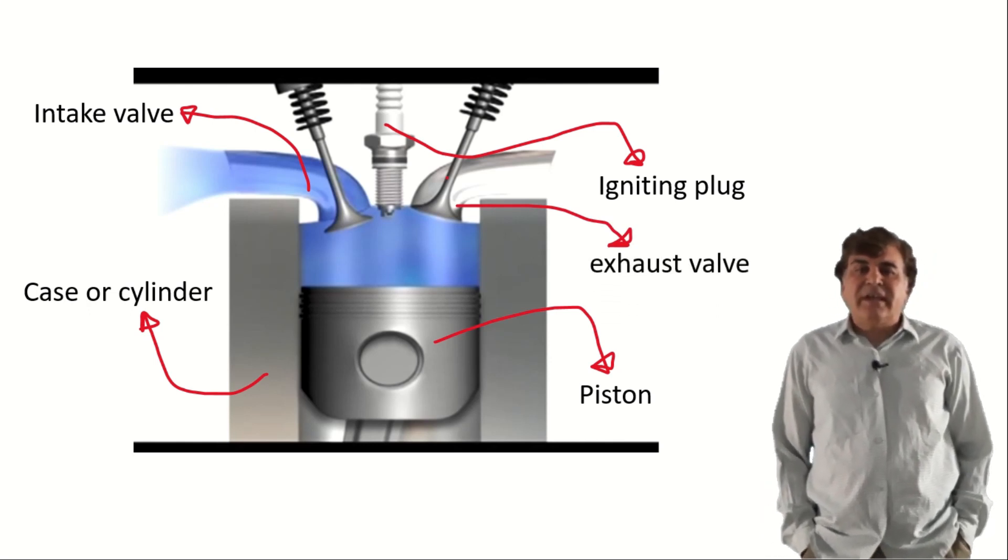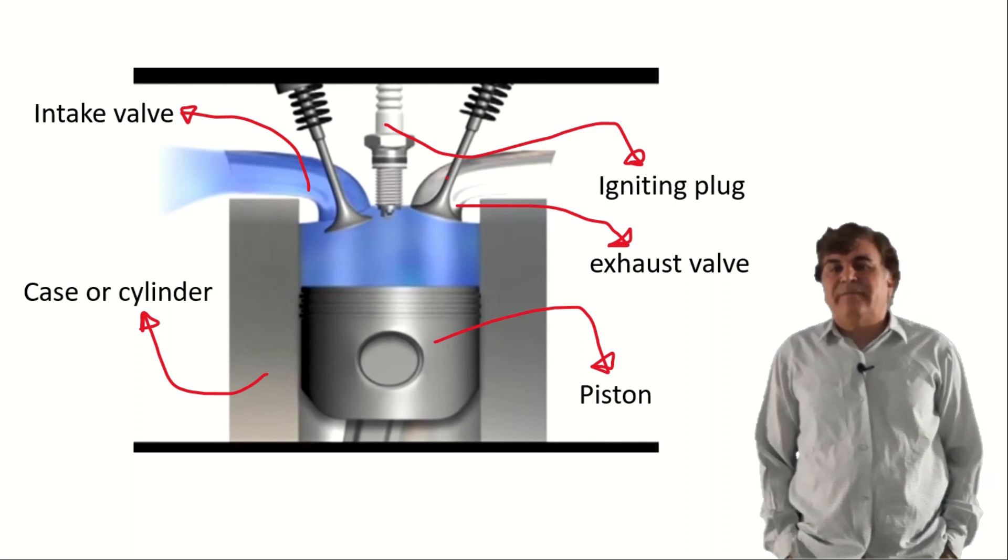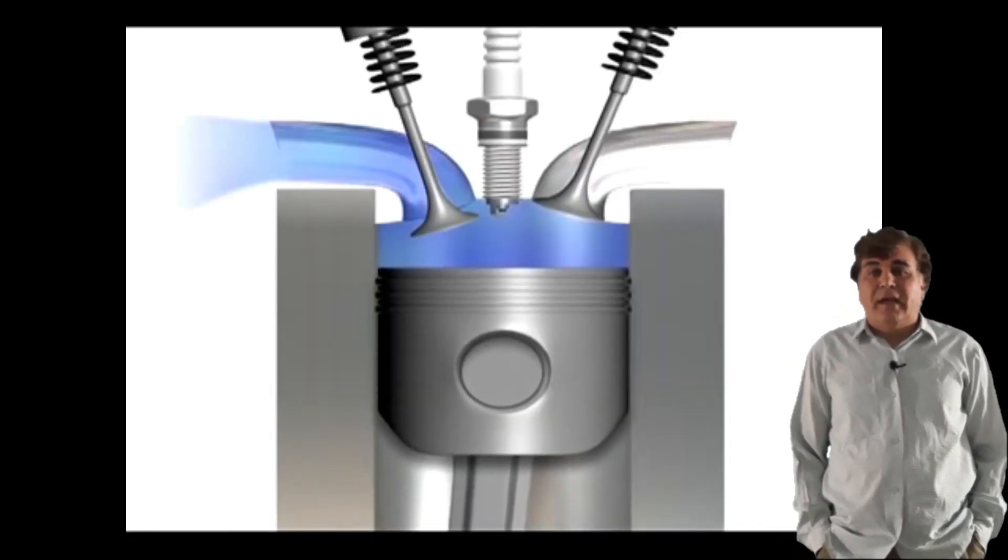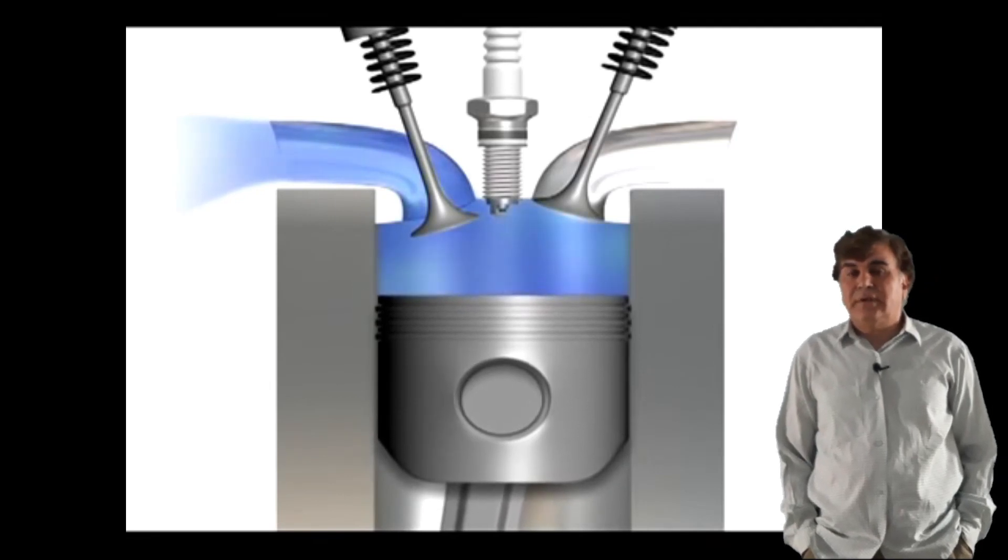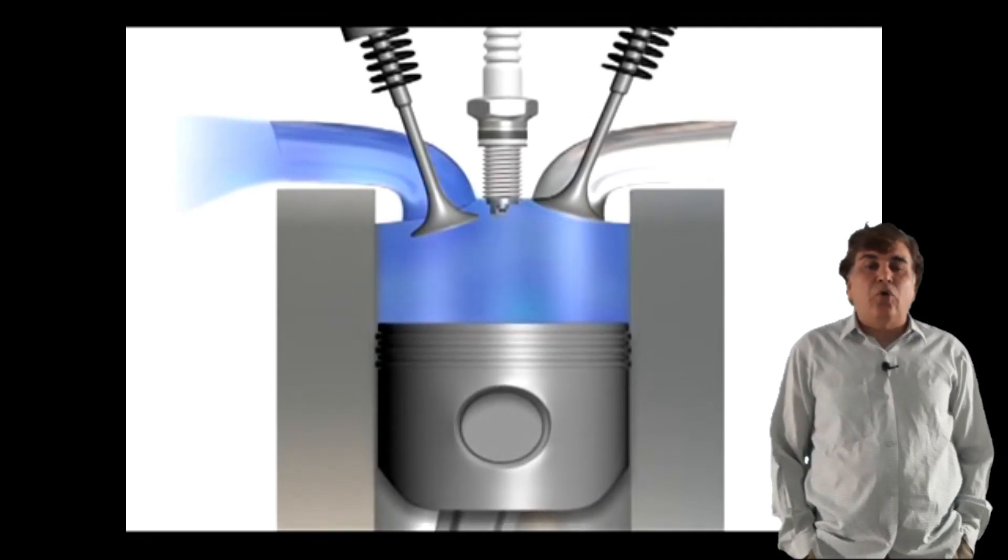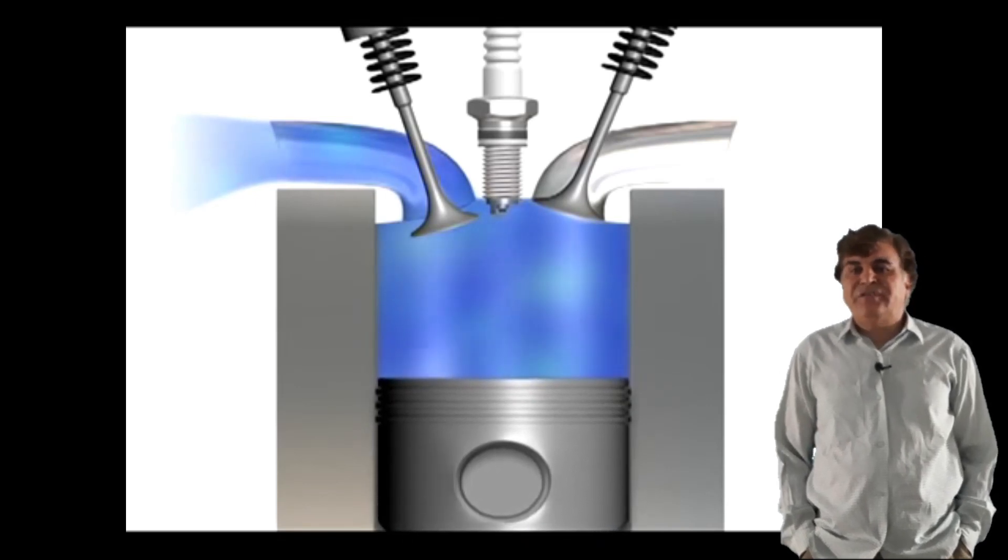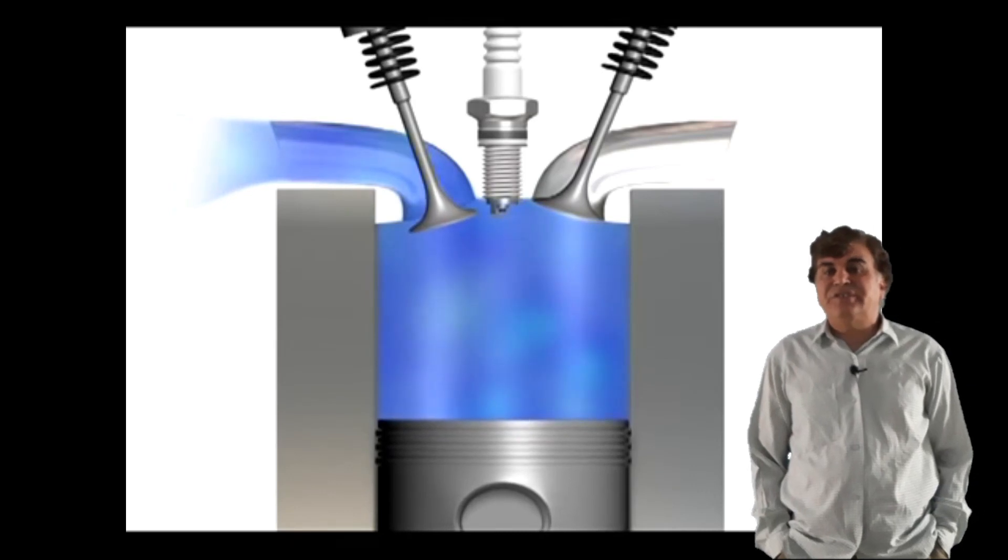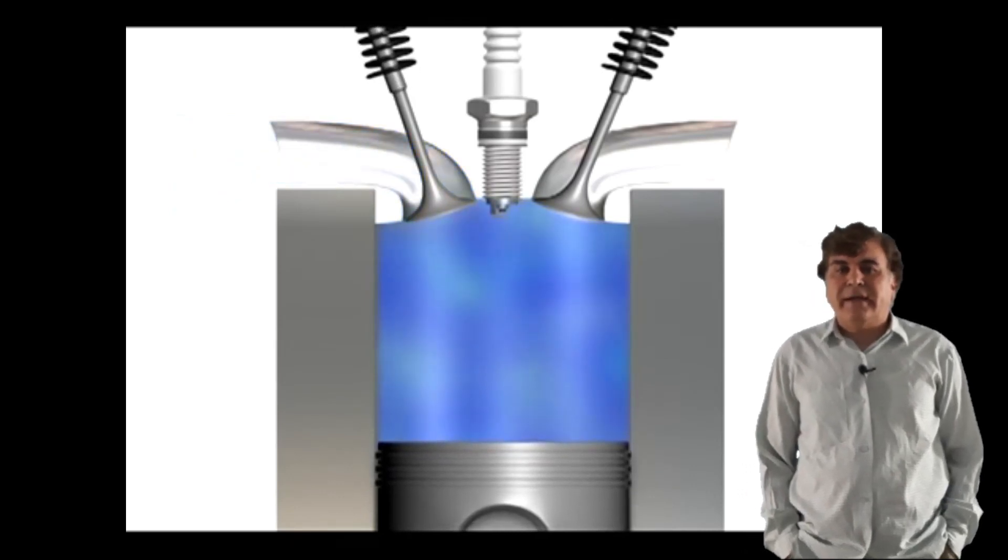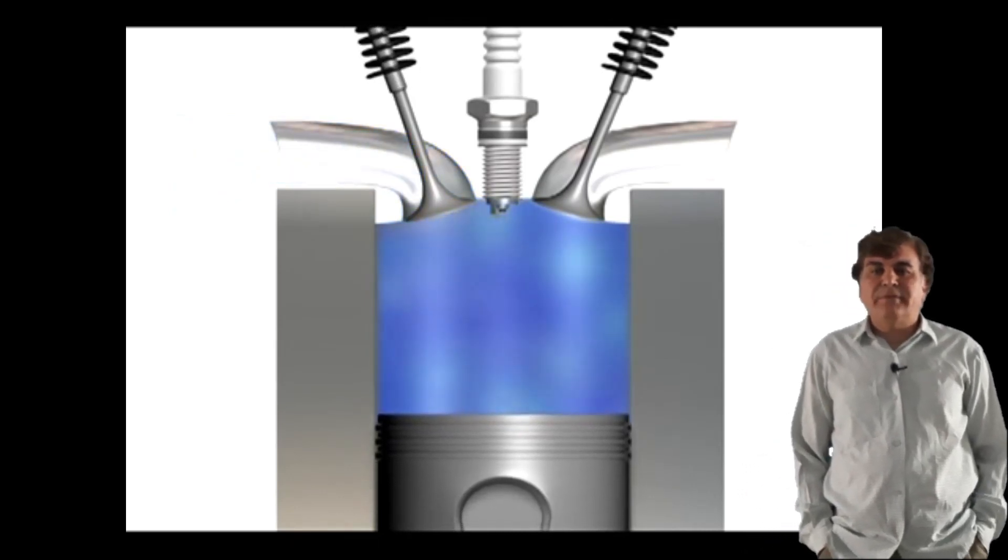A complete cycle of the piston consists of four strokes. In the first downward stroke, the intake valve opens and a mixture of air and fuel fills the combustion chamber. Right at the lower turning point of the piston, the intake valve closes.